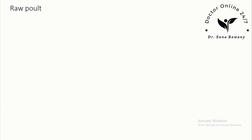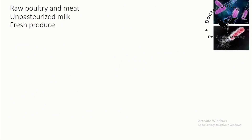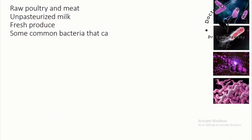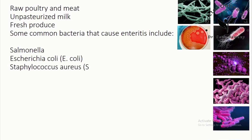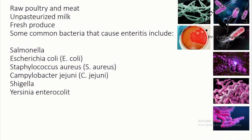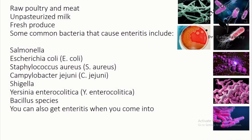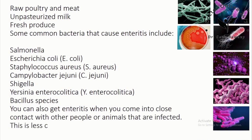The foods most often associated with food poisoning are raw poultry and meat, unpasteurized milk, and fresh produce. Some common bacteria that cause enteritis include Salmonella, Escherichia coli (E. coli), Staphylococcus aureus (S. aureus), Campylobacter jejuni (C. jejuni), Shigella, Yersinia enterocolitica (Y. enterocolitica), and Bacillus species. You can also get enteritis through close contact with infected people or animals, though this is less common.